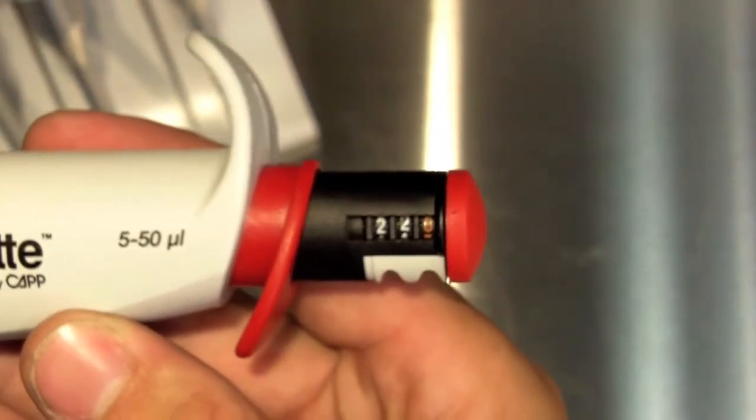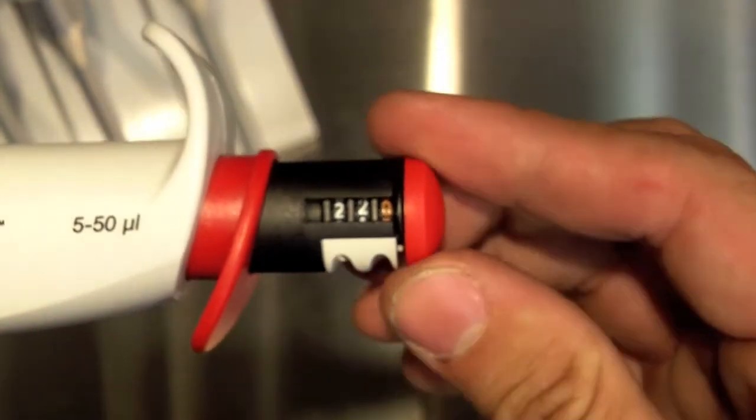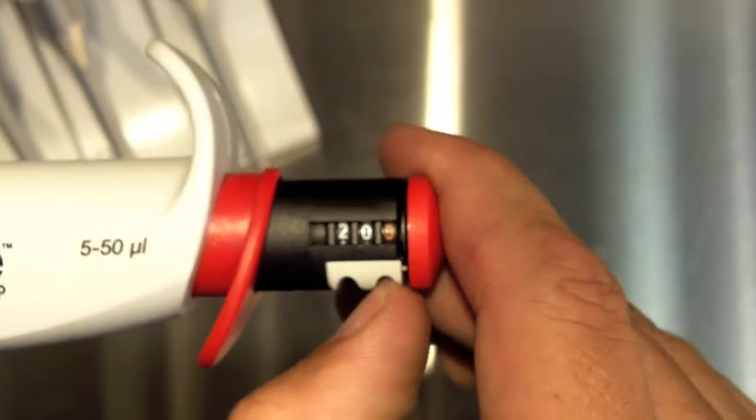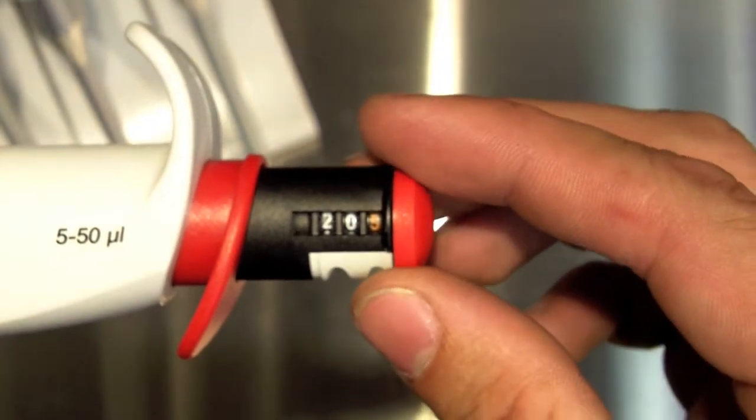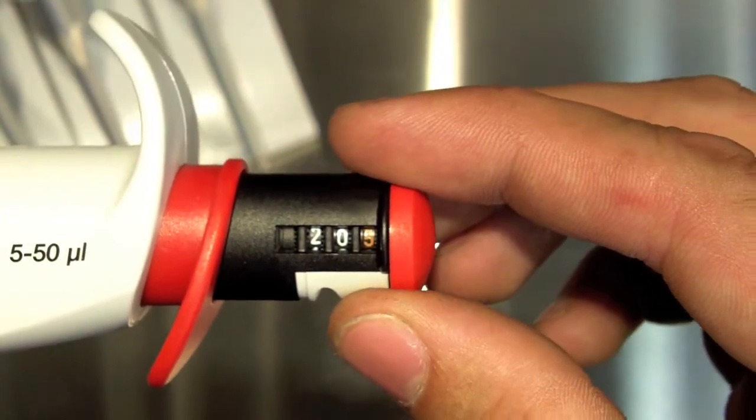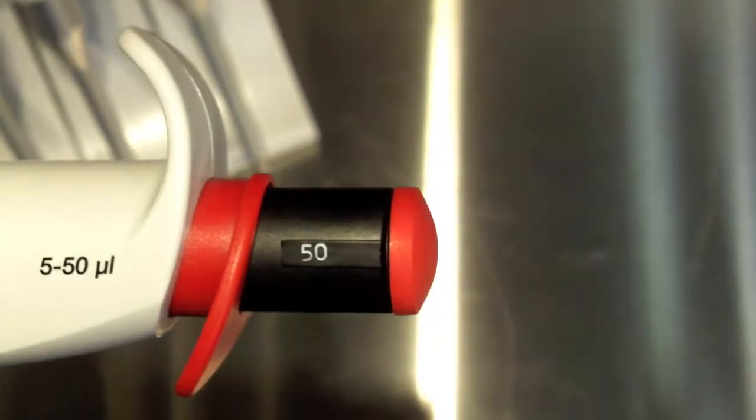One of the most unique features of the CAP pipette is the ability to transition from a variable volume pipette to a fixed volume pipette simply by replacing the knob. So we simply pull out the variable volume knob and put in a fixed volume knob.